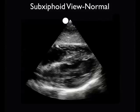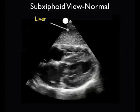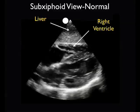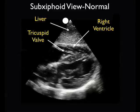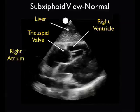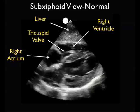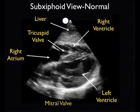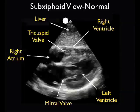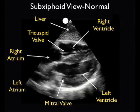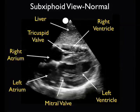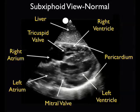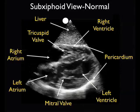Now let's look at a video clip of a normal heart from the subxiphoid plane. The liver is our acoustic window and is seen anteriorly at the top of the screen. Just below the liver we appreciate the right ventricle, and just to its left the right atrium. Notice the tricuspid valve flipping up and down between the right atrium and right ventricle. Posterior to the right ventricle is the more muscular left ventricle, and to its left the left atrium, with the mitral valve visible flipping between them. Note the white pericardial line both anteriorly above the right ventricle and posteriorly below the left ventricle, with no significant pericardial effusion present.